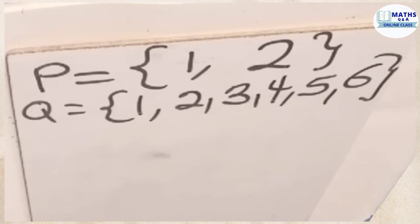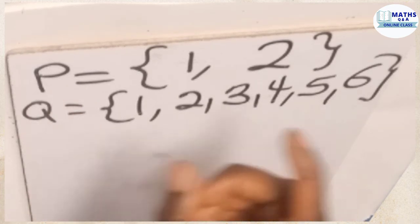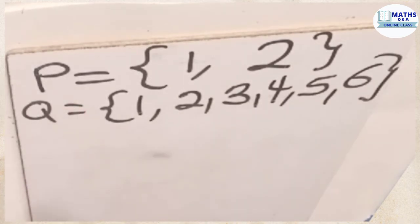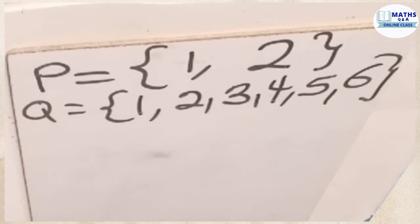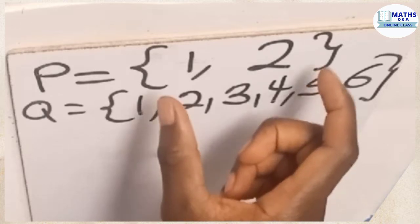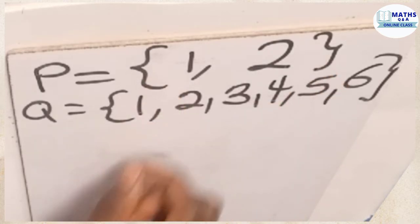In the sense that we have P and Q, which of the members in set P can also be found in set Q? Those are the members that we call intersection. Those members are common to P and Q.